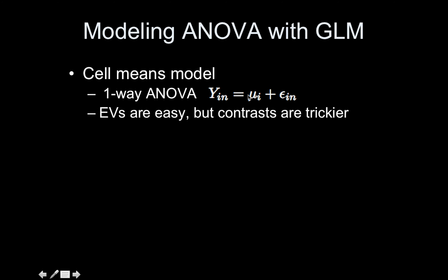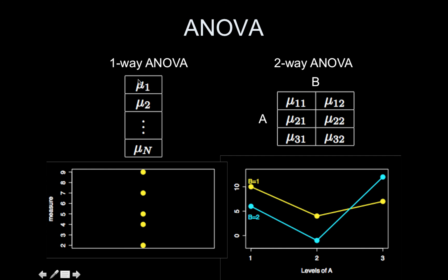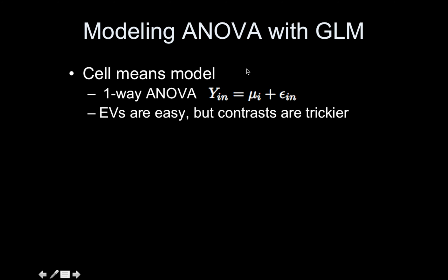The cell means model, which we talked about last time, directly models the mean for each of the cells — such as the mean reaction time for group one, group two, and so on. The EVs, or regressors (EV stands for explanatory variable), are very intuitive, but the contrast can be a bit trickier. Specifically, the contrast for the traditional ANOVA test of an overall main effect of A was not completely intuitive to set up.